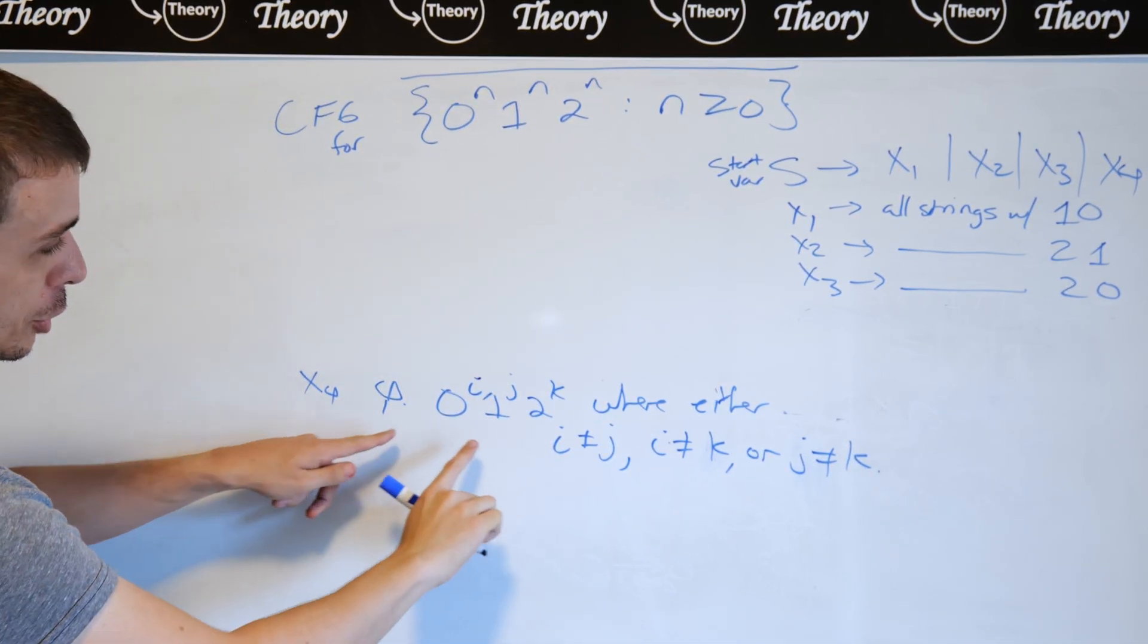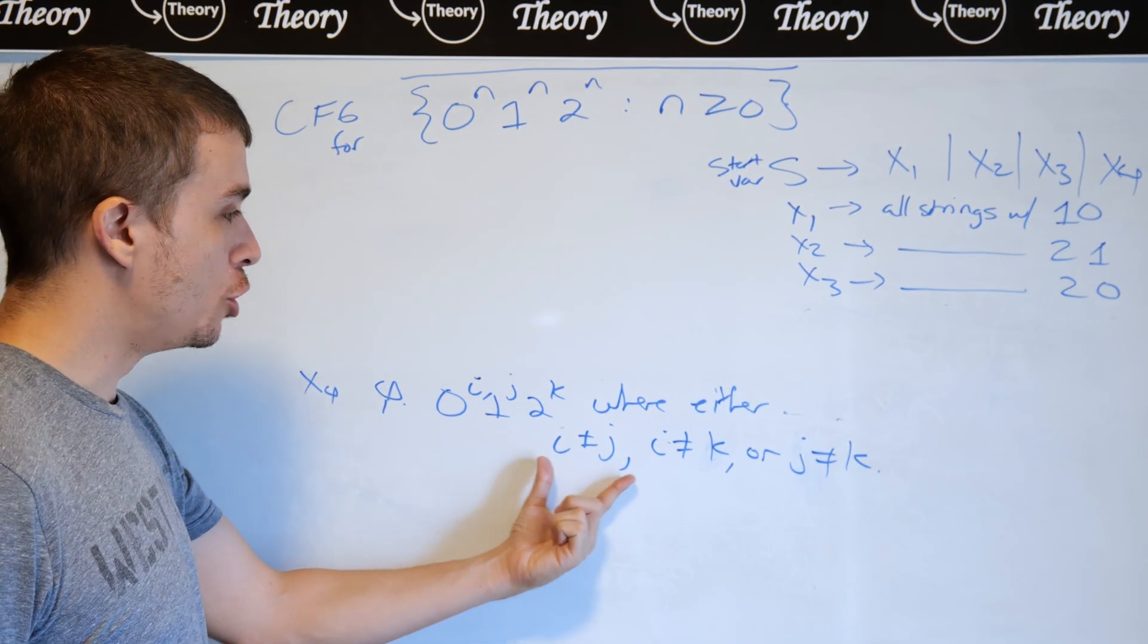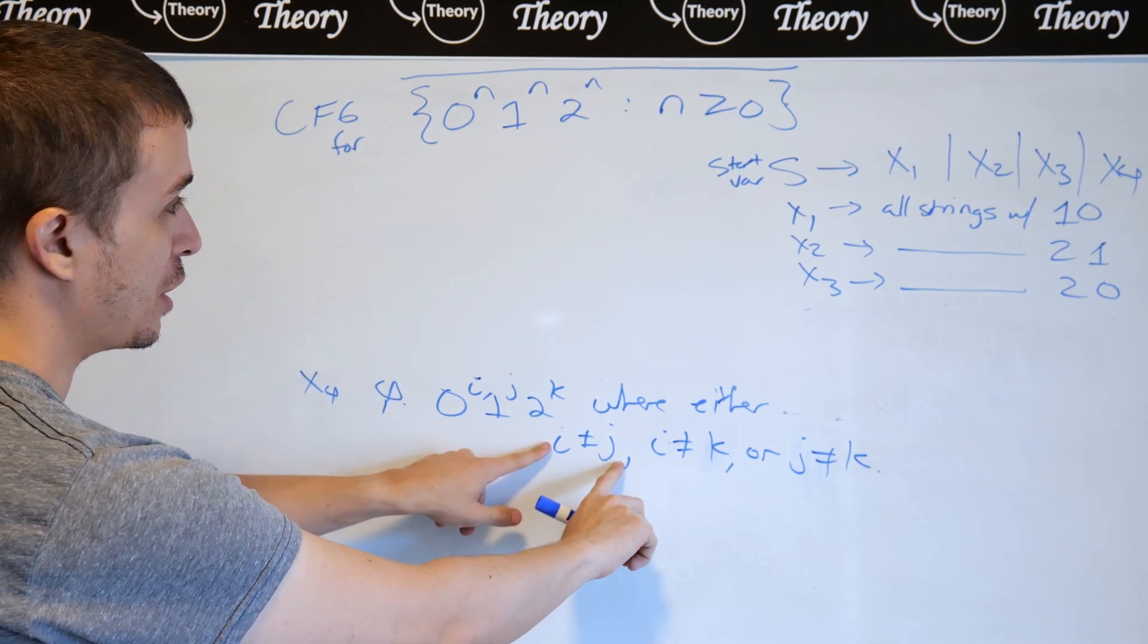So I have all strings of 0s, then 1s, then 2s, where i is not j, i is not k, or j is not k. So what I'm going to do is I'm going to focus on this.